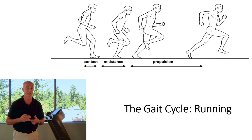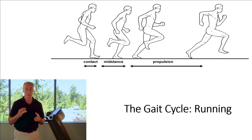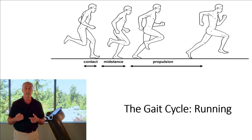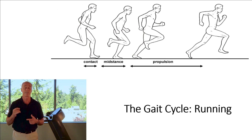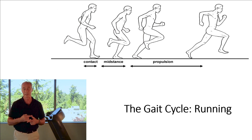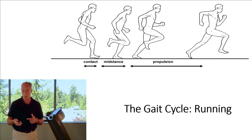Stride lengths also vary. Stride length with running can be over 11 and a half feet — longer than the stride length of a comparably weighted quadruped.